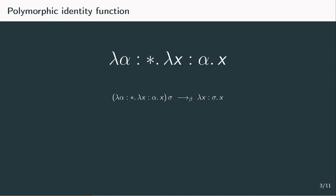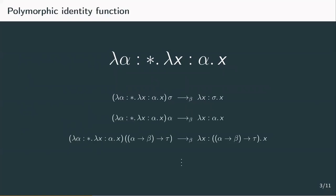With this, we can see that from the polymorphic identity function we can indeed get all kinds of identity functions, no matter what type the input should have. So here we see the identity function with type alpha, or even a more complex type like alpha to beta to tau.